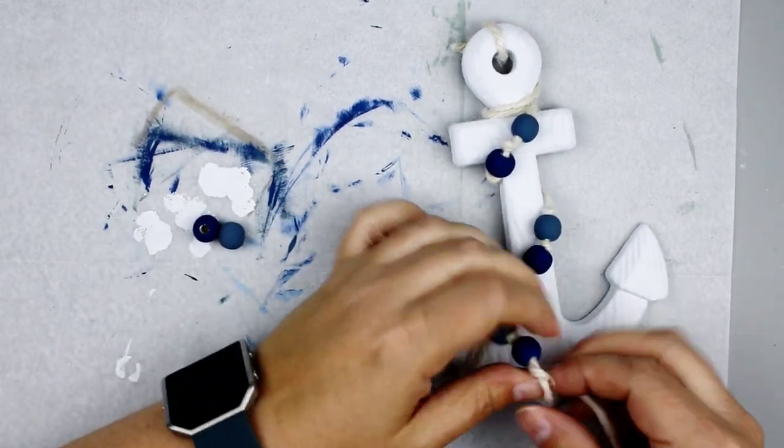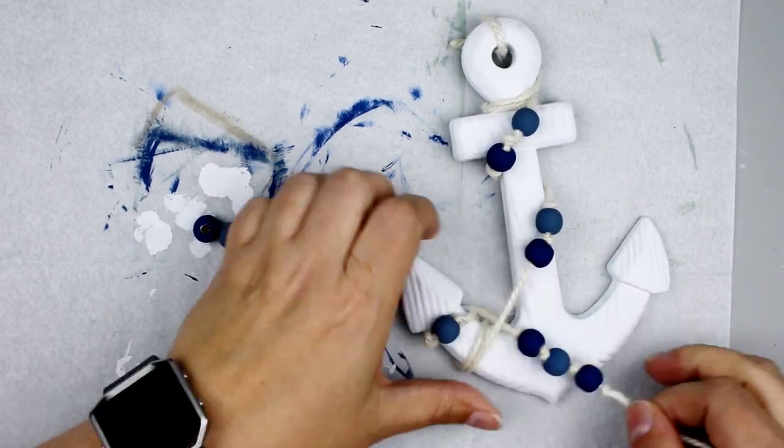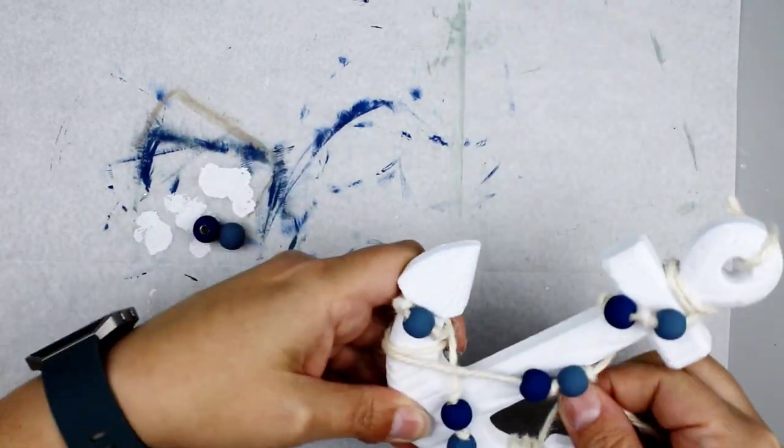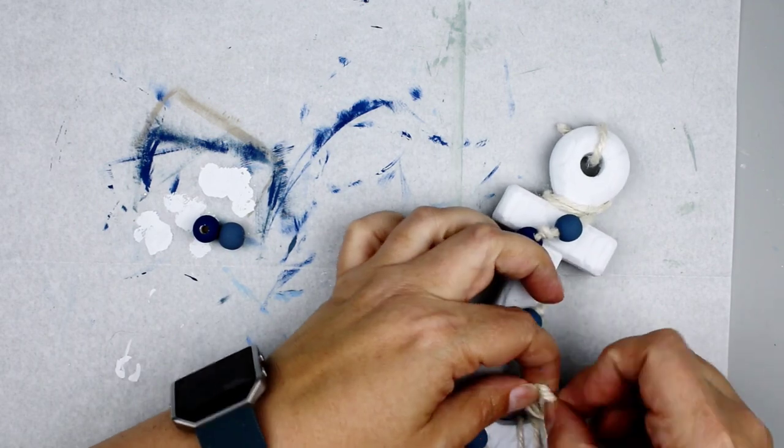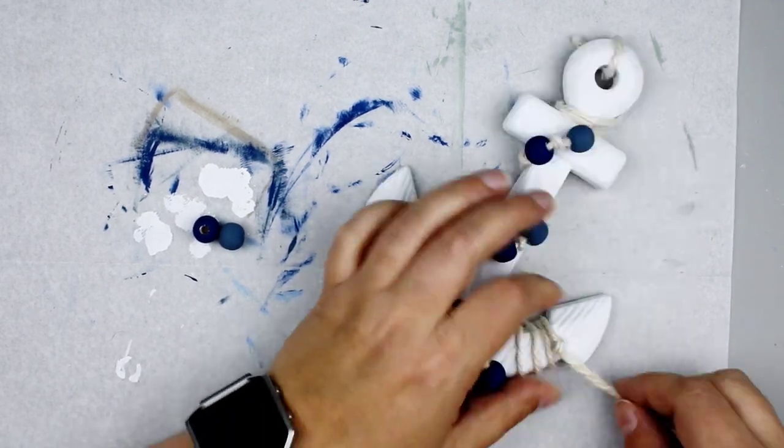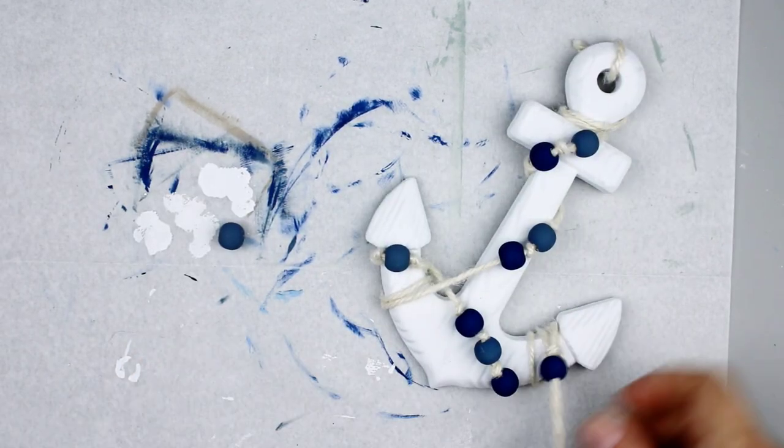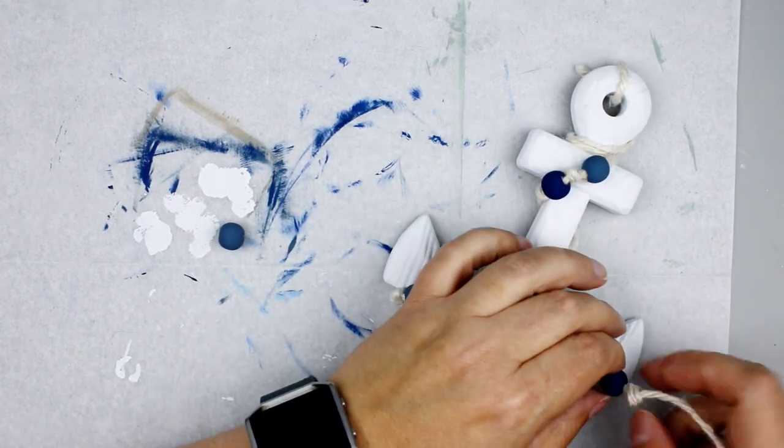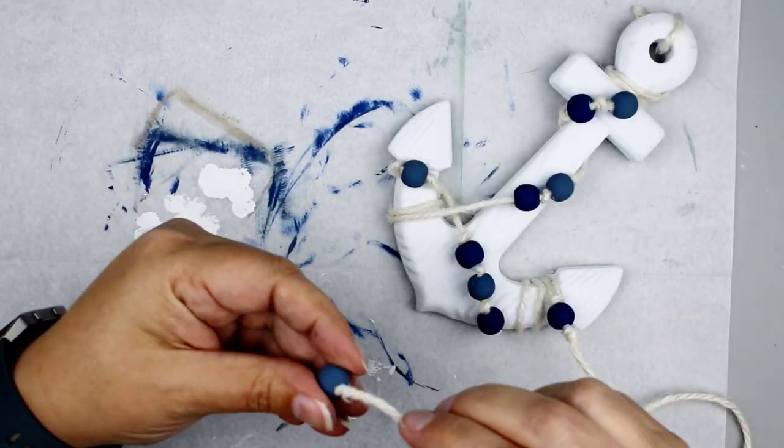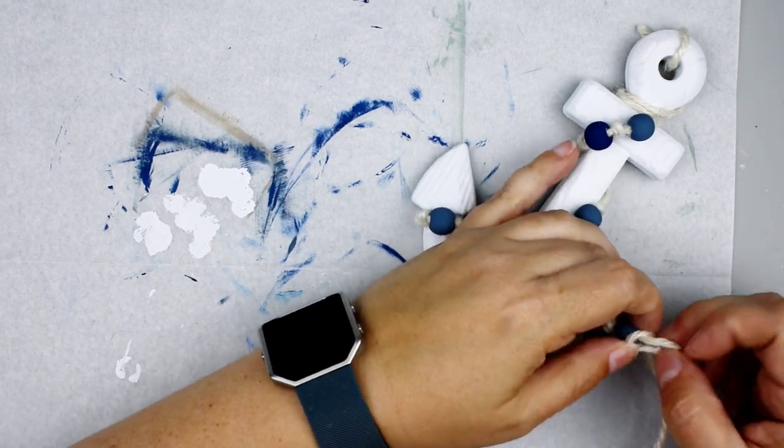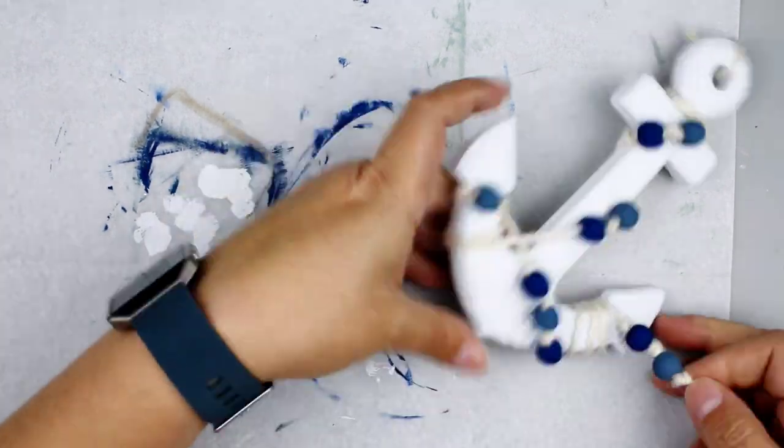So I'm just going to continue to wrap the rope around and knot in these beads. And like I said, you can just kind of hot glue them in place if you need to as you go. But I really didn't need to do that. So I'm just going to finish it off with a little knot in the back. And you don't see me do that, but I just finish it off with a little knot in the back and then just hot glue that end down so that it all stays in place.